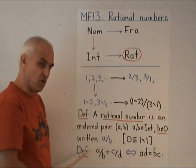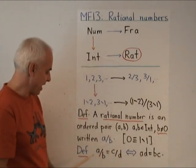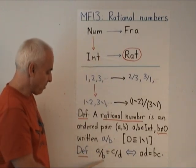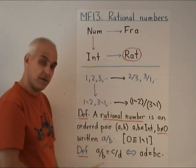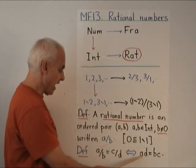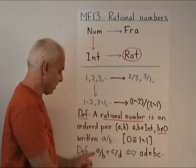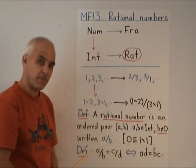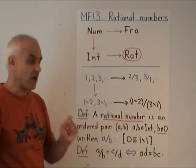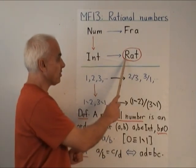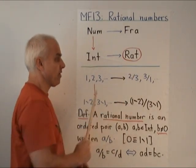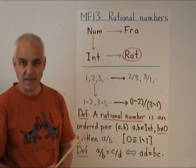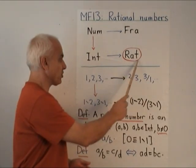And there's an important notion of equality that you'll not be surprised at by now, that A over B is equal to C over D, precisely when AD equals BC. When this times this equals this times this. So that's what a rational number is, and we illustrate that type by symbol RAT.